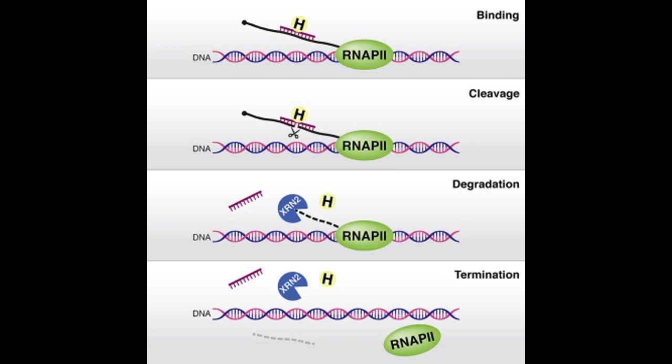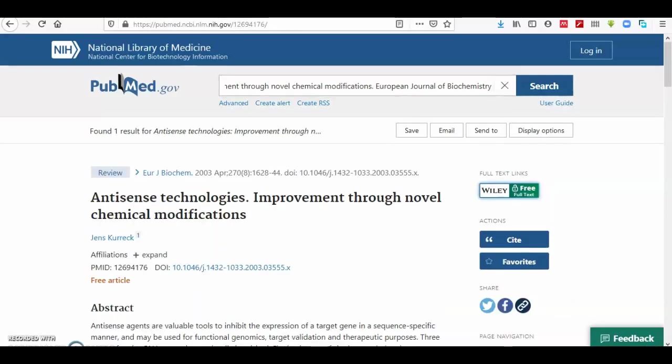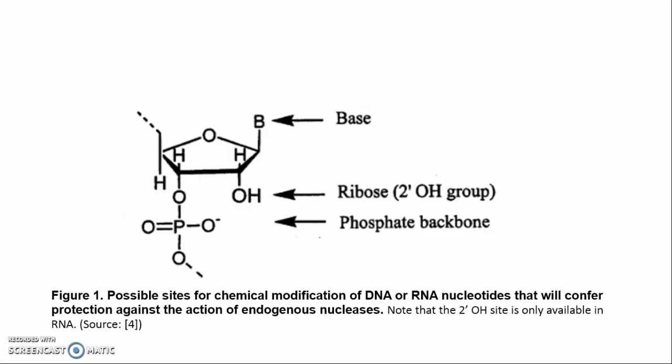Following Coruк, there are three possible sites on a nucleotide where protective modifications could be introduced (Figure 1). In both DNA and RNA nucleotides, the base can be altered or changes can be affected.